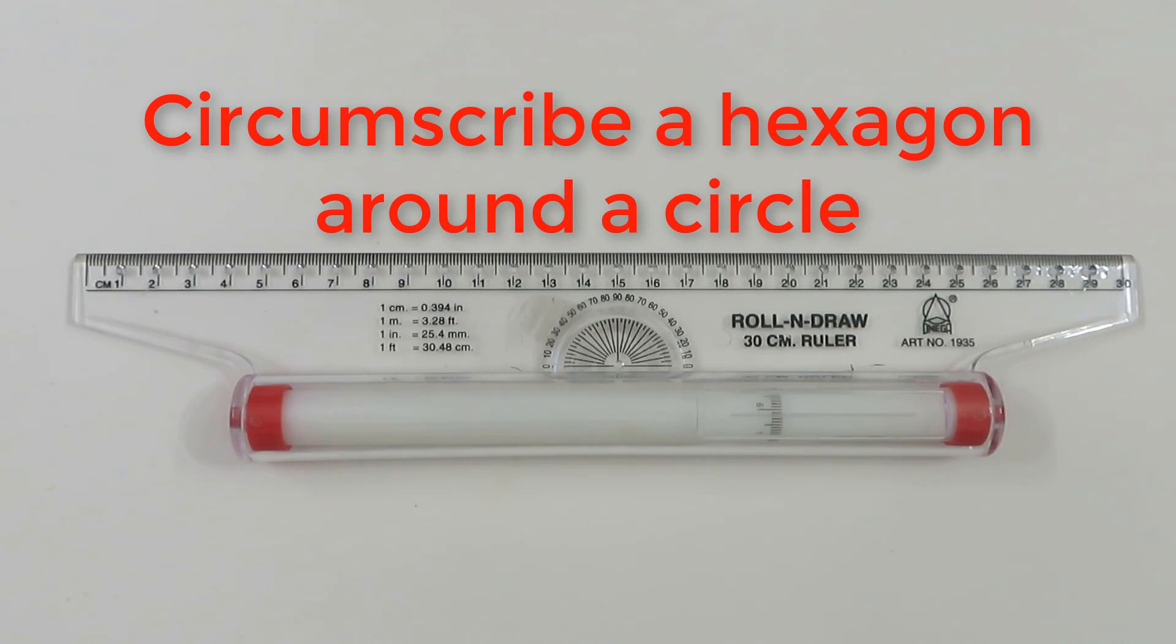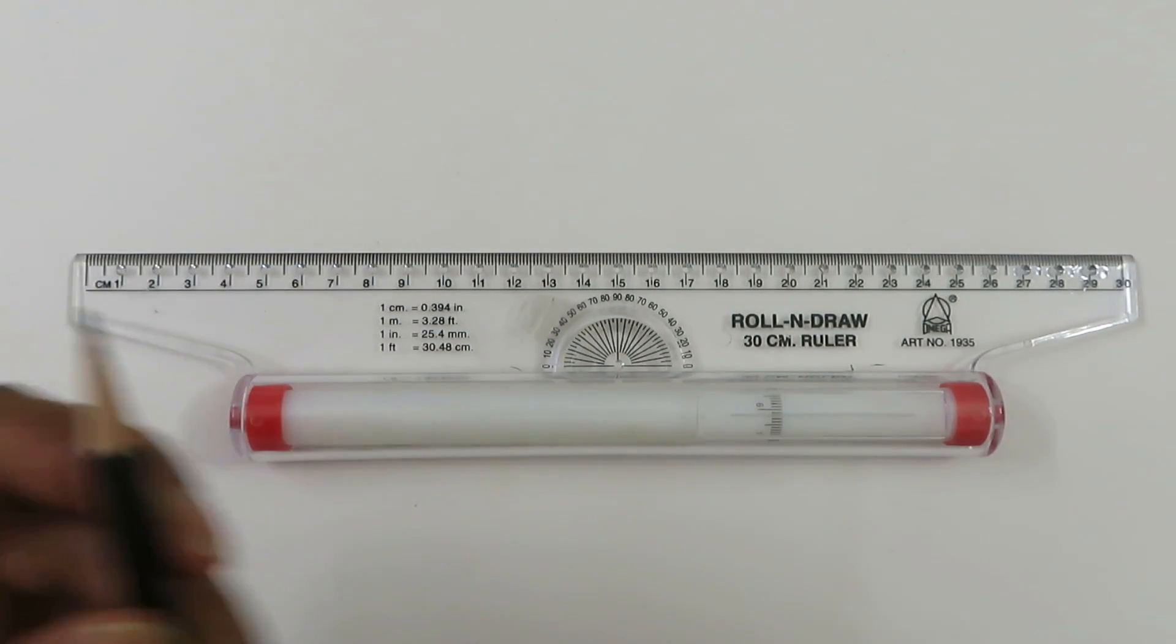Hello, welcome to this channel. Today in this video I would like to show you how to circumscribe a hexagon on a circle, which means how we can make a hexagon if a circle is given.